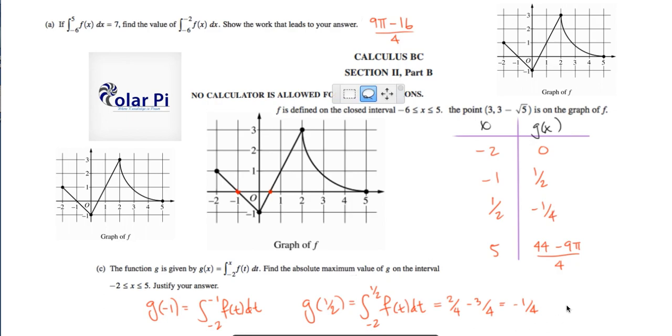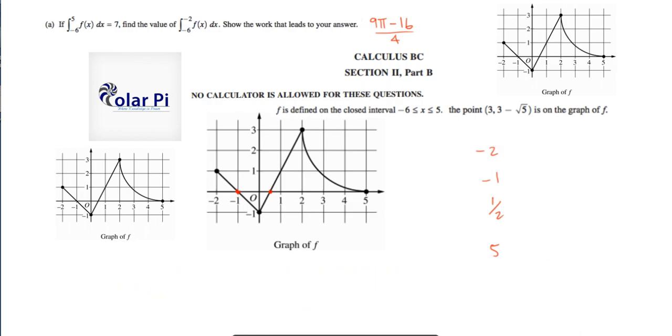So clearly, this guy's biggest. If we use, like, 3 as an approximation of pi, we have 44 minus 27 divided by 4. That beats everybody that's on the right-hand side here. And so, the global or absolute maximum value of g is this here, and it occurs at x equals 5. On to d.